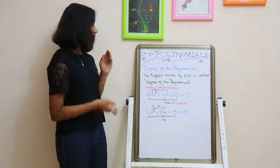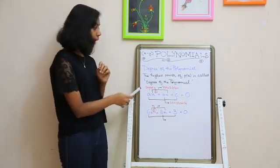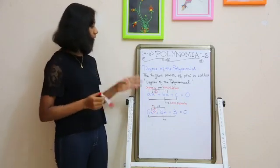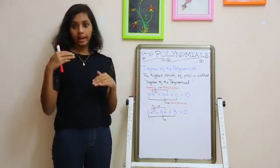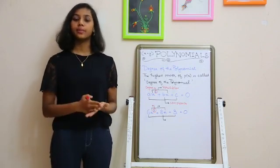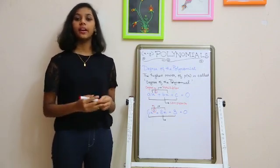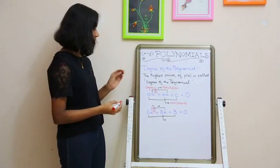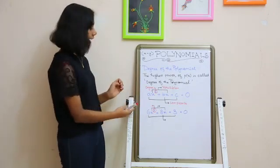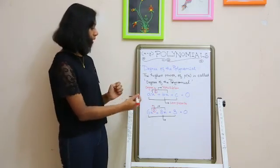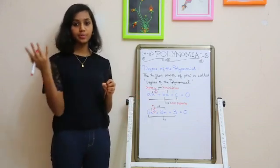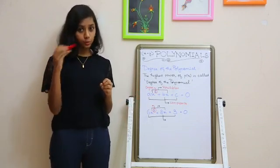What is the degree of the polynomial? The highest power of p(x) is called the degree of the polynomial. So the highest power of x in that equation or expression is called the degree. In the standard form ax² + bx + c = 0, the highest power is 2.